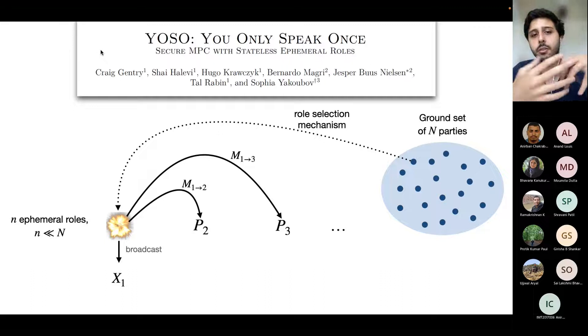Once this role is executed, for all we care, the machine that executed this role could go offline forever. It doesn't need to keep state or speak again.